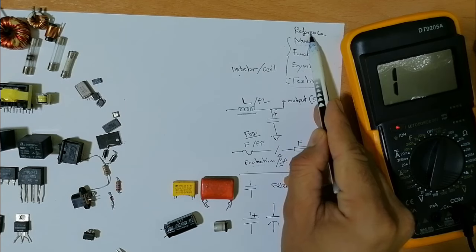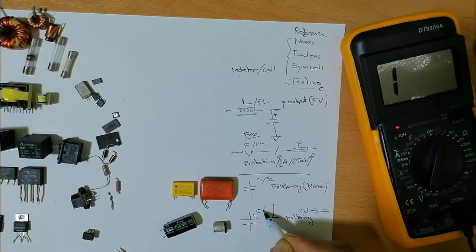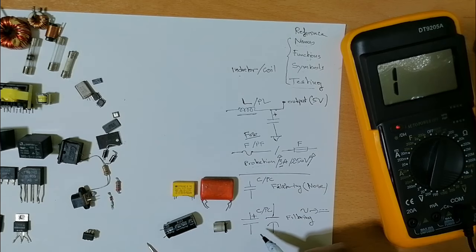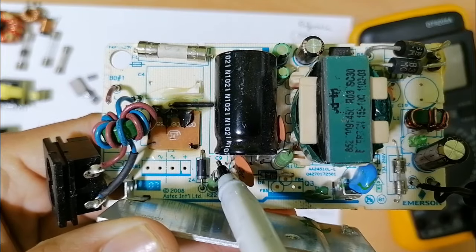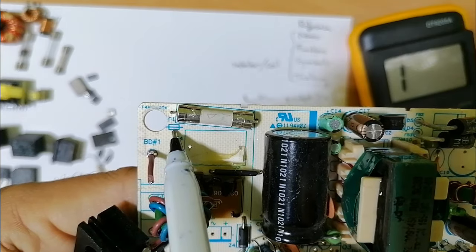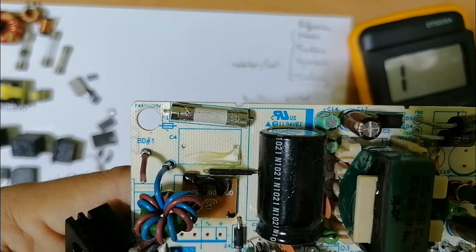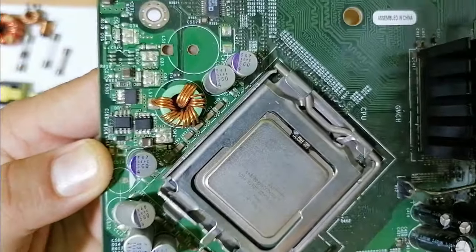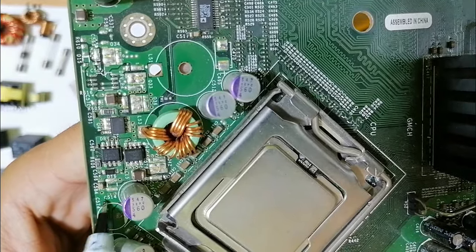The reference for the capacitor is C, or sometimes PC. For example, on a motherboard you can find C9 or C540. For the fuse we saw earlier, the reference is F1.